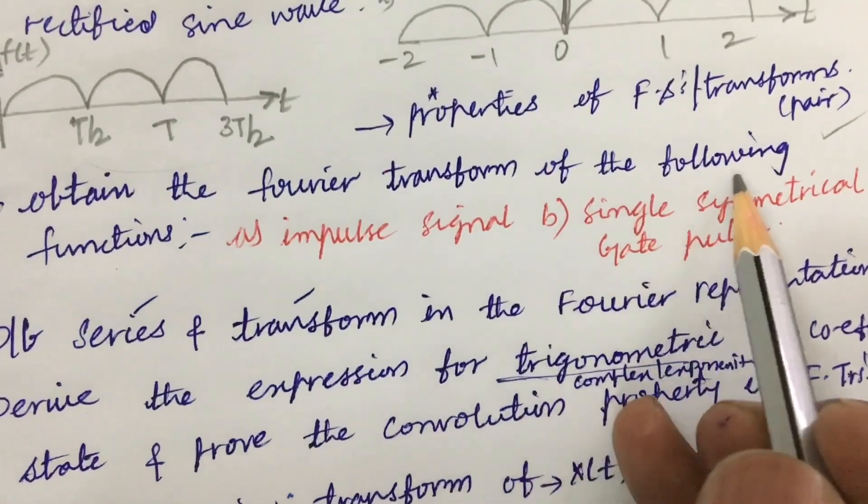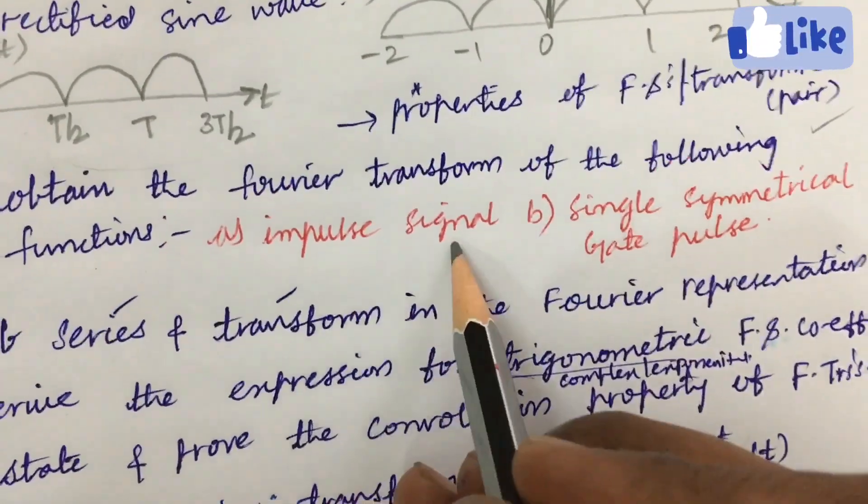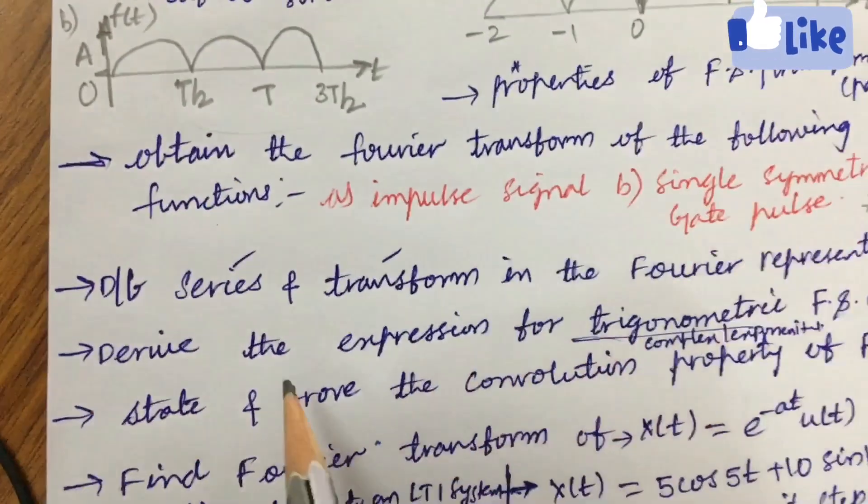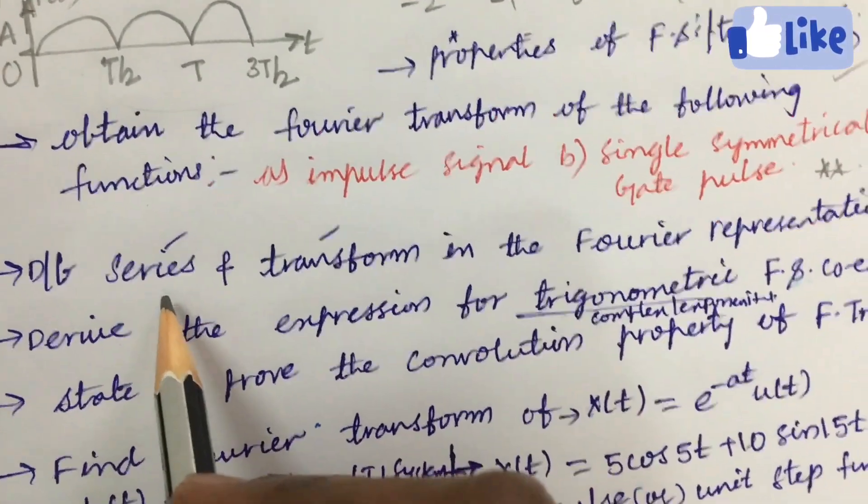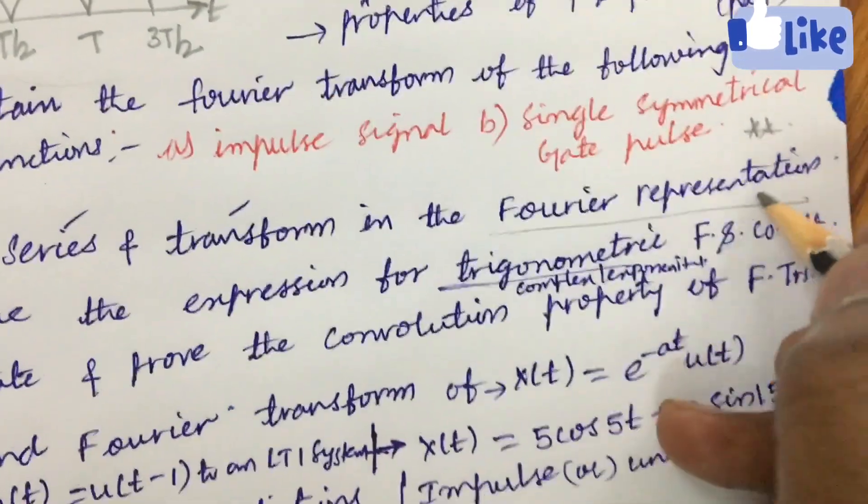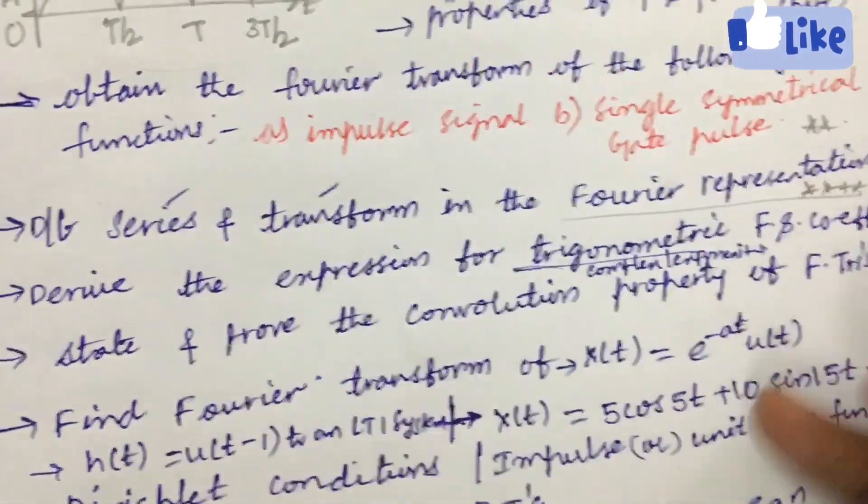Obtain the Fourier transform of the following functions of impulse signal as well as single symmetric gate pulse may be a 7 mark question. Later the differences between series and transforms in a Fourier representation is one of the very very important question for 7 mark or 5 mark.